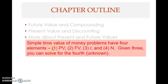In this chapter we look at simple time value of money problems. These basic problems have four elements: PV (present value), FV (future value), r (interest rate or discount rate), and n (number of periods or length of time).